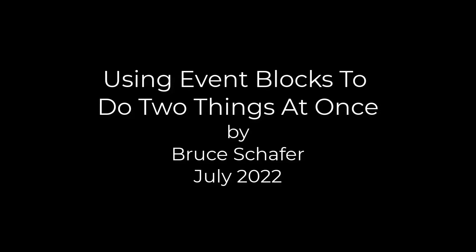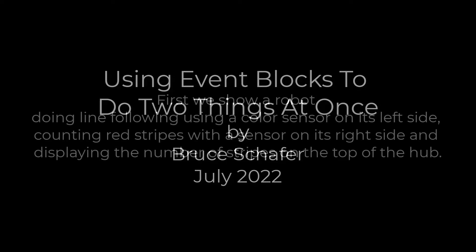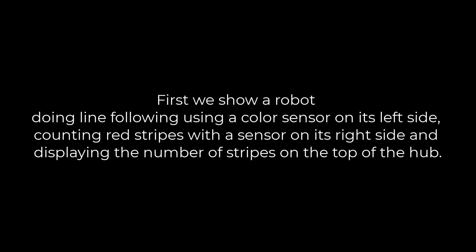Using event blocks to do two things at once. First, we show a robot doing line following using a color sensor on its left side, counting red stripes with a sensor on its right side, and displaying the number of stripes on the top of the hub.